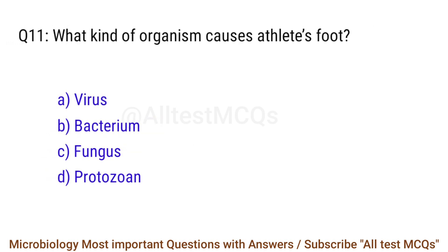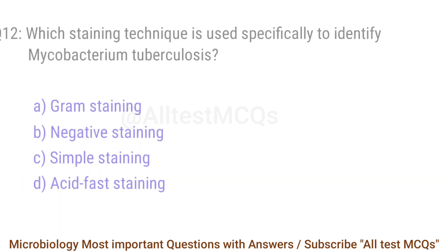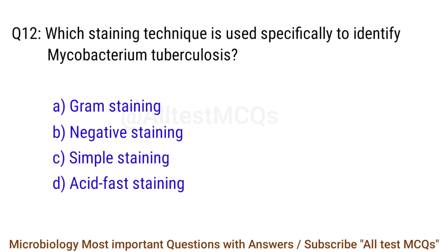Q11. What kind of organism causes athlete's foot? The right answer is option C: Fungus. Q12. Which staining technique is used specifically to identify Mycobacterium tuberculosis? The right answer is option D: Acid-fast staining.